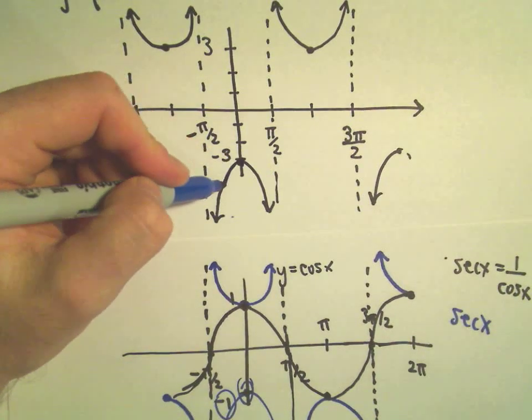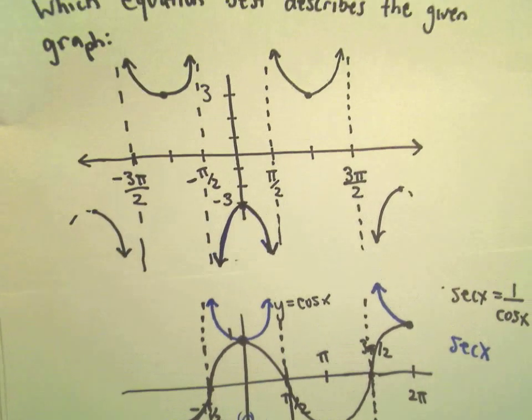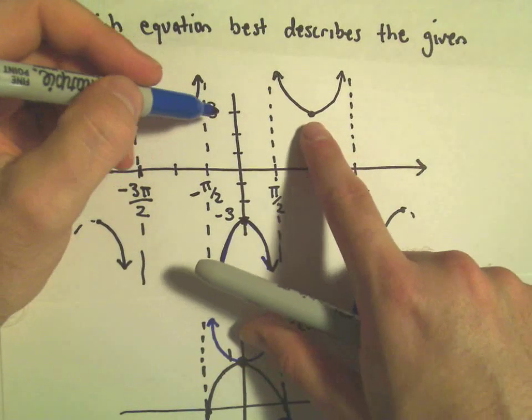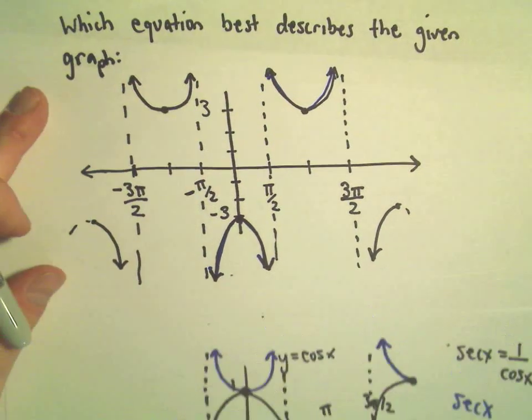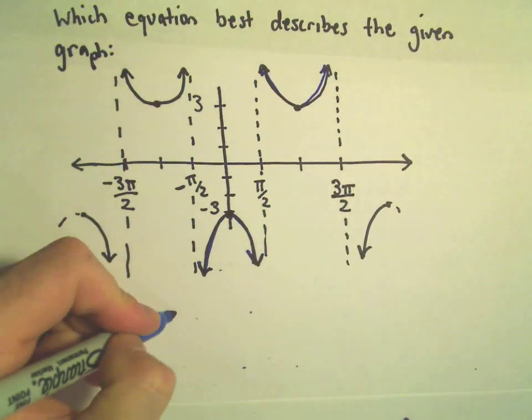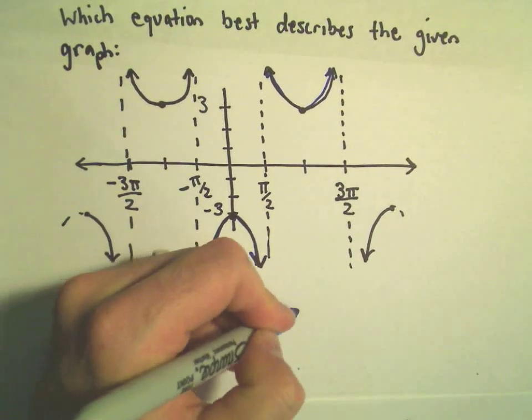And that would make it start at negative 3 and then it would just go down. Same thing over here. It's starting at positive 3 and going up. So to me, this looks most like the graph y equals negative 3 secant x. Thank you.